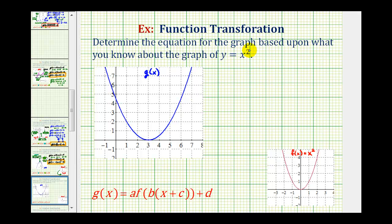We want to determine the equation for the graph in blue based upon what we know about the graph of y equals x squared, graphed here in red. So we'll let y equal f of x, so we'll call this f of x equals x squared, and then we'll call a transformed function g of x.